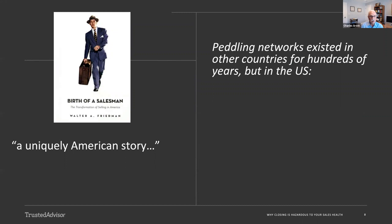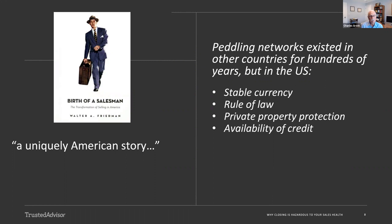As the author points out, much of this comes out of the U.S. experience. We had peddling networks for many centuries in other countries in Europe in particular, but the U.S. represented an interesting confluence of circumstances. We had a stable currency, even in the early years there was a relatively stable rule of law. The U.S. always had strong private property protections, reasonable availability of credit, and the ability to scale. The geographic size of the United States was unique, has been unique for several centuries.